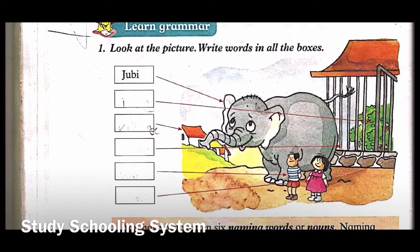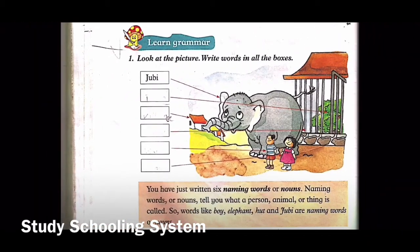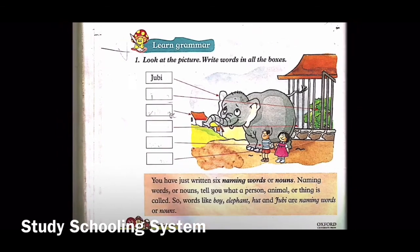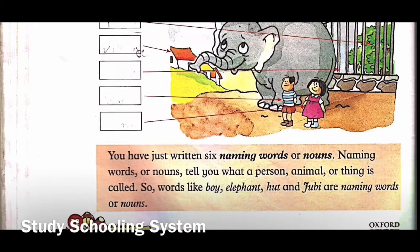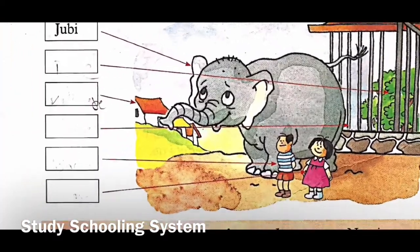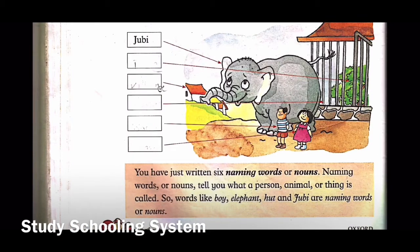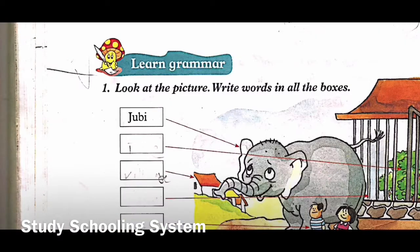Look at the picture and write words in all the boxes. You have just written six naming words or nouns. Naming words or nouns tell you what a person, animal, or thing is called. Words like boy, elephant, hut, and Jubi are naming words or nouns. For example, Jubi is a noun - it is an animal. Same way, a chair, a boy - all of these things are also nouns.